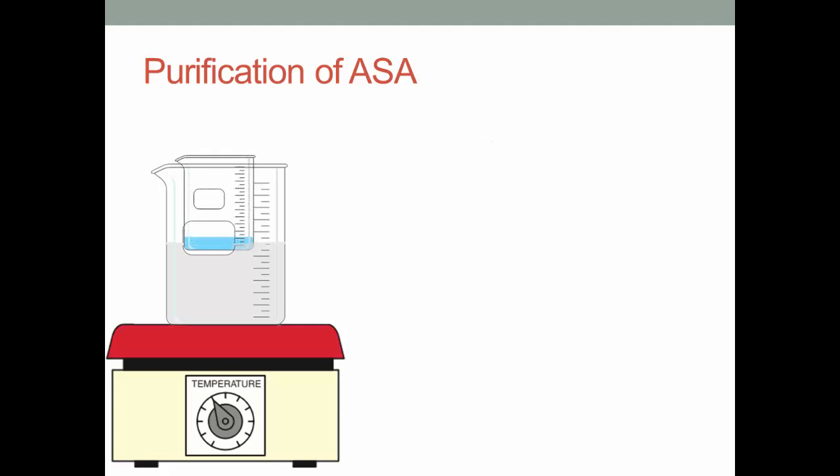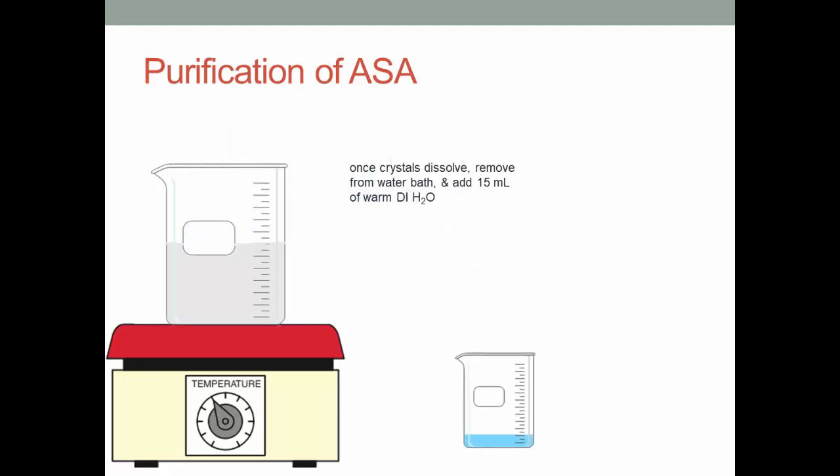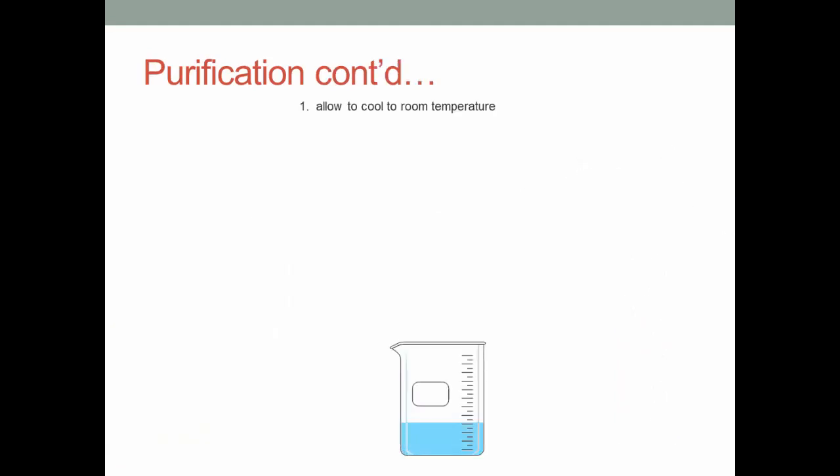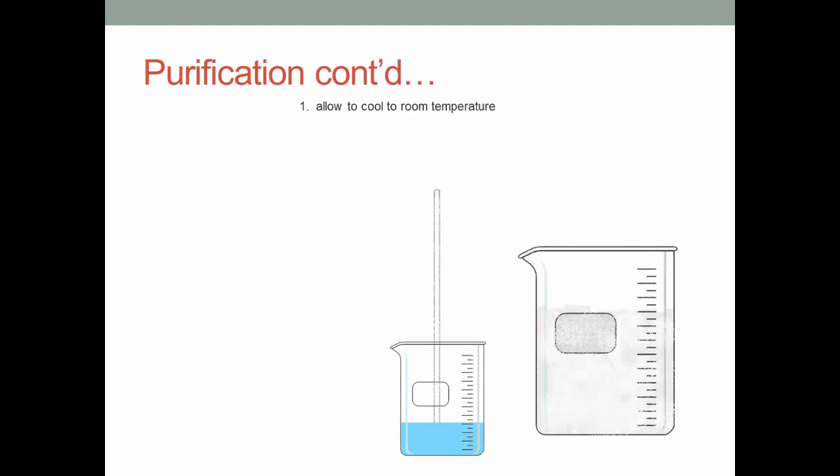Once all the ASA crystals have dissolved, take the beaker from the water bath and add 15 ml of warm, deionized water. Allow the solution to cool to room temperature. Scratch the beaker using a glass stirring rod to help with crystal formation.